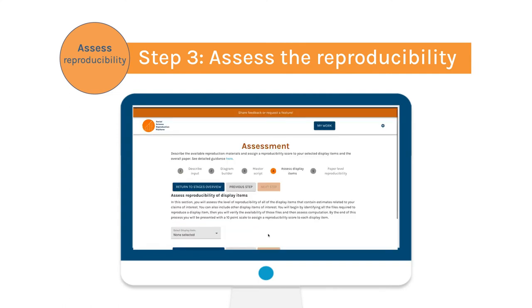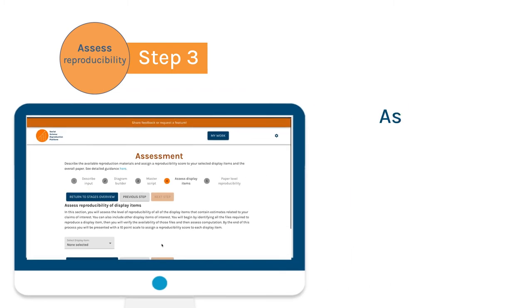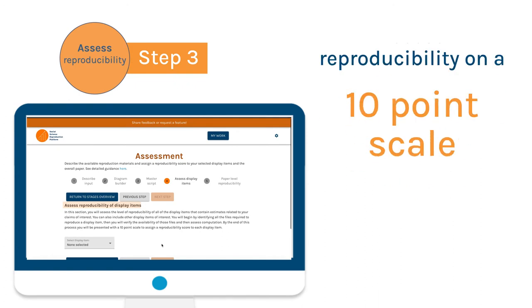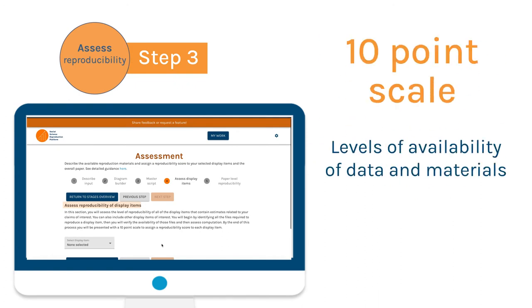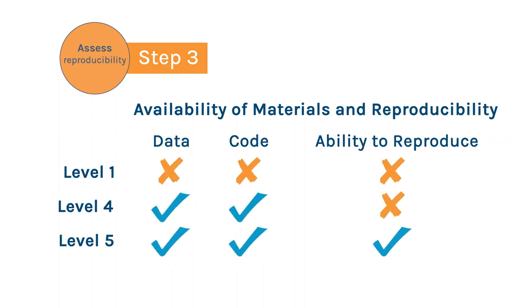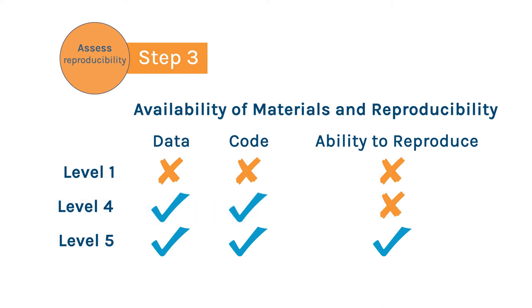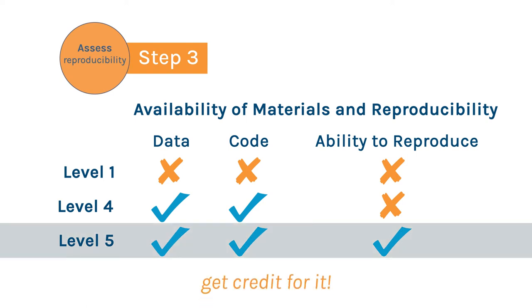A central stage of the reproduction is assessment, where reproducers review and describe in detail the original reproduction package and assess the selected display items' current levels of reproducibility using a 10-point scale. This scale accounts for the availability of data and code and whether the available materials faithfully reproduce the item of interest. For example, if one reproducer identifies a result to be reproducible at level 4 because of issues in running the analysis code, then they, or future reproducers, can debug the code and upgrade its reproducibility to level 5, and get credit for it.